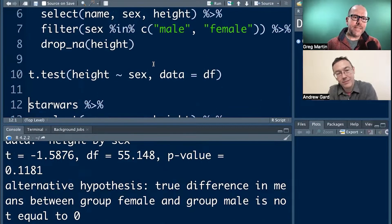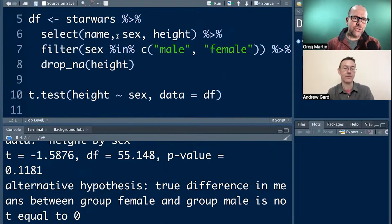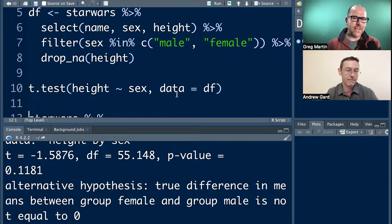But the point here is, you can't pipe straight from drop NA heights, pipe that straight into t-test, because when you pipe data, it expects the data object to be the first argument in the next function. And the t-test wants to see the data object or the data right at the end. It's the last argument. So how do we fix that?